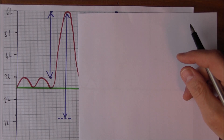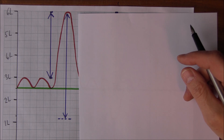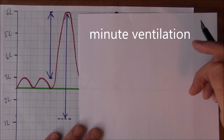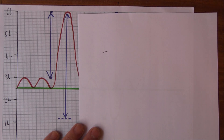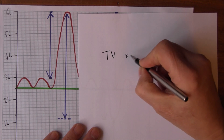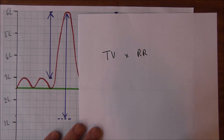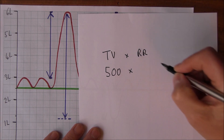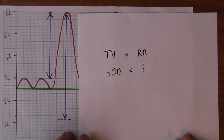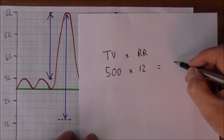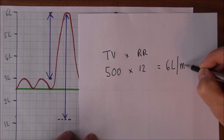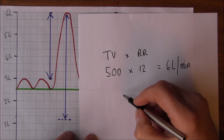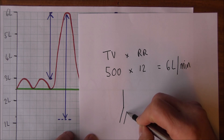As well as these figures, it's interesting to think about ventilation over time. We have something called the Minute Ventilation — the amount of air going in and out of the lungs per minute. This equals the Tidal Volume multiplied by the Respiratory Rate: 500 mils times about 12 breaths per minute at rest, giving us around about 6 liters of air going in and out of the lungs per minute.